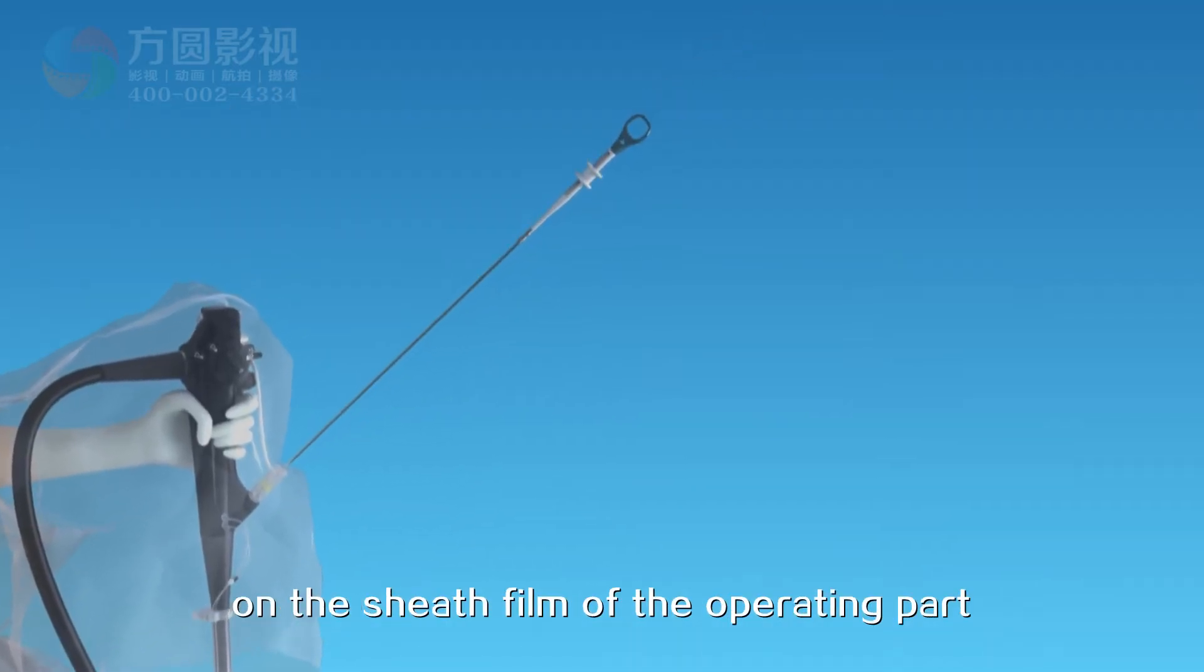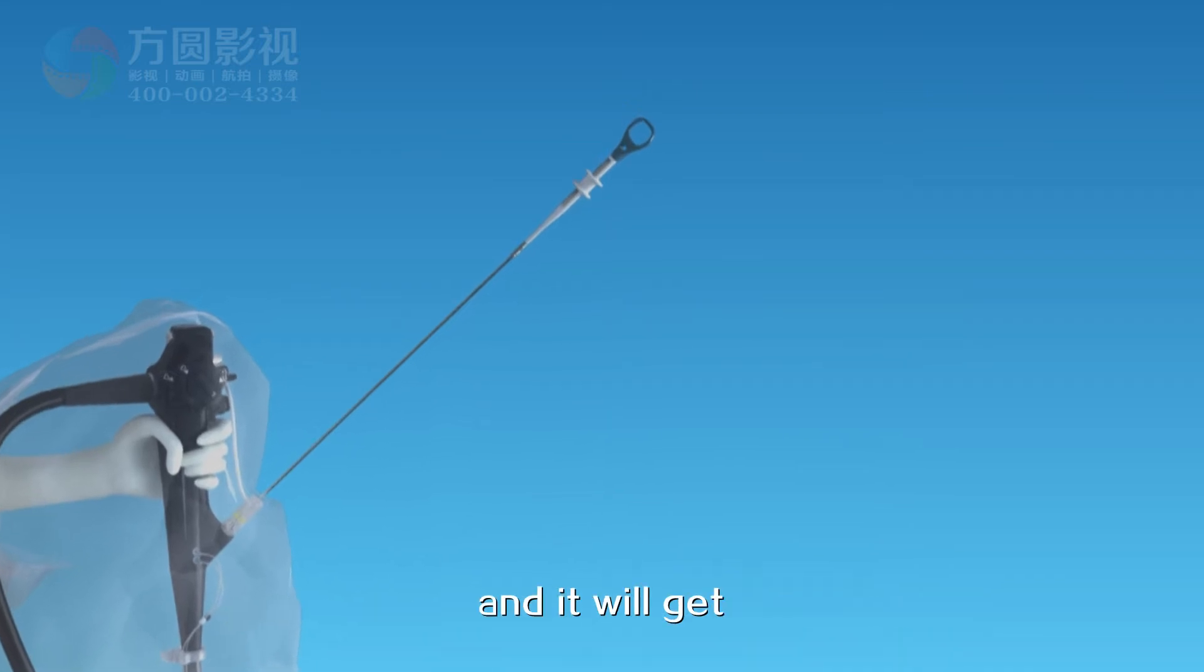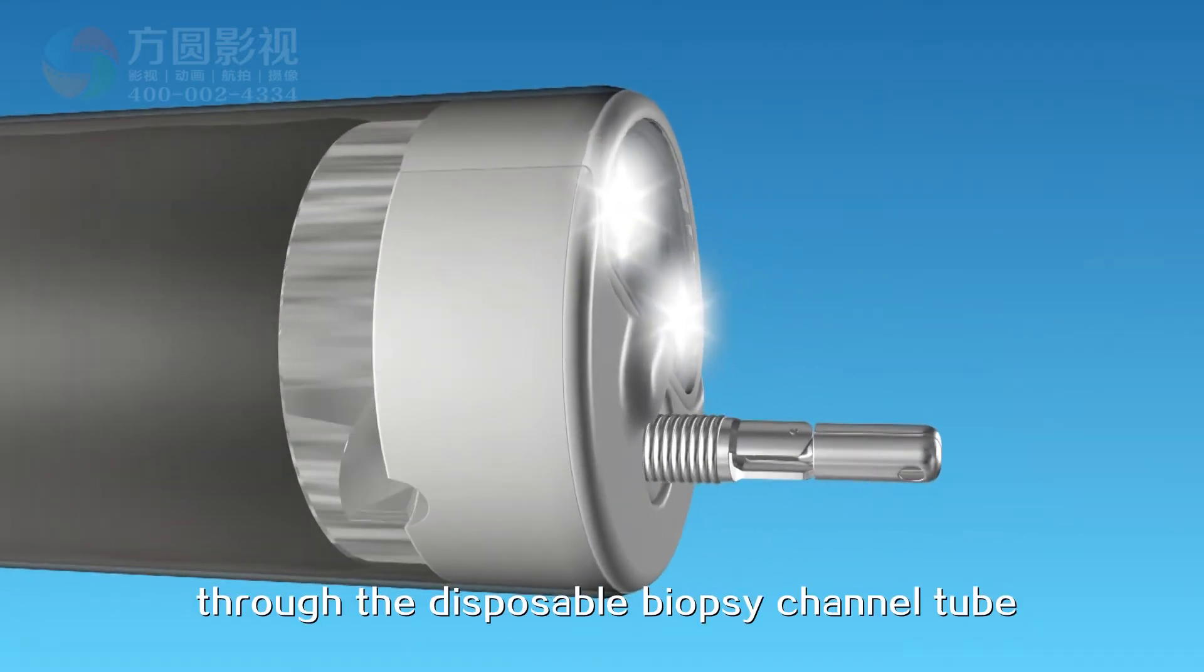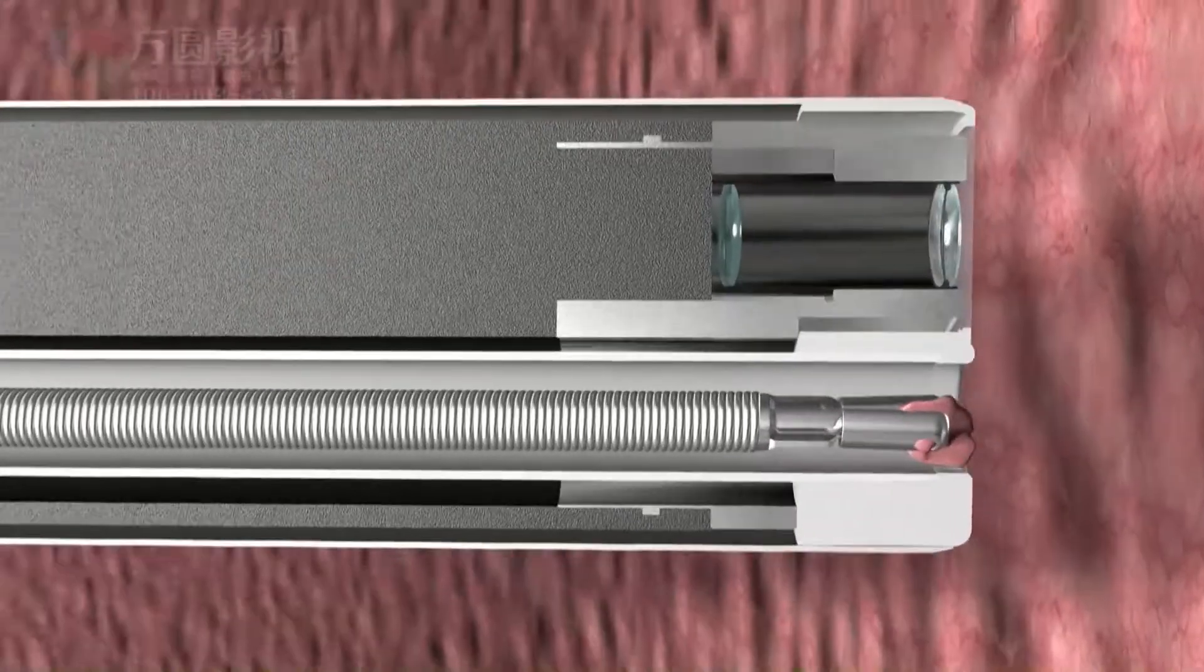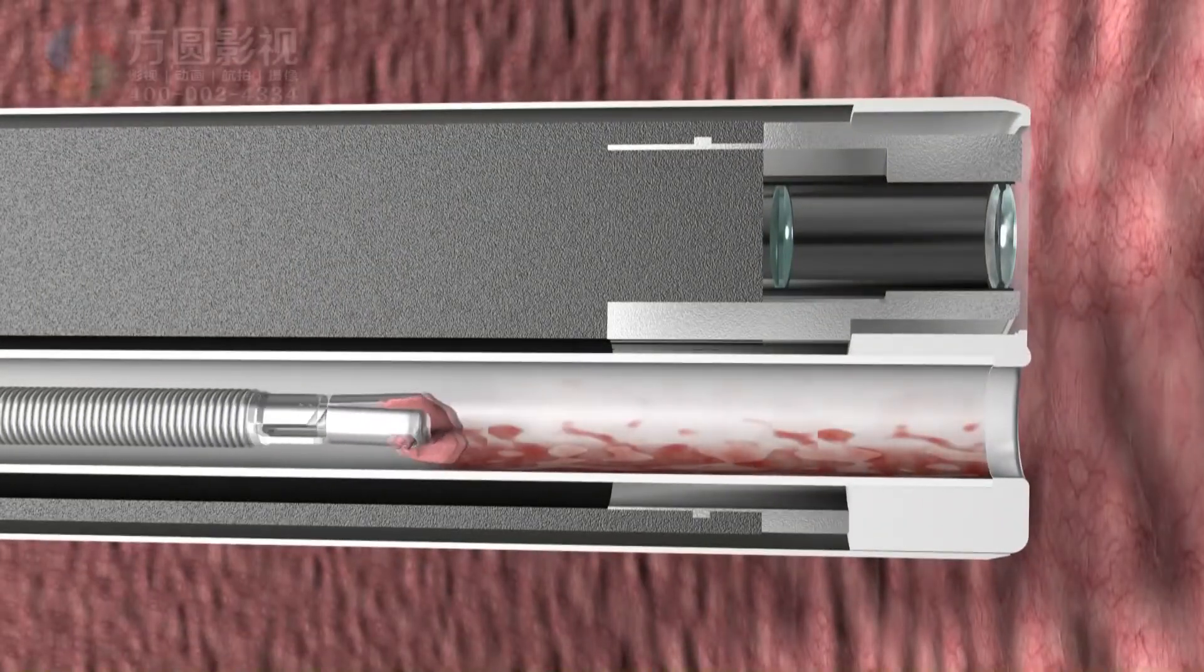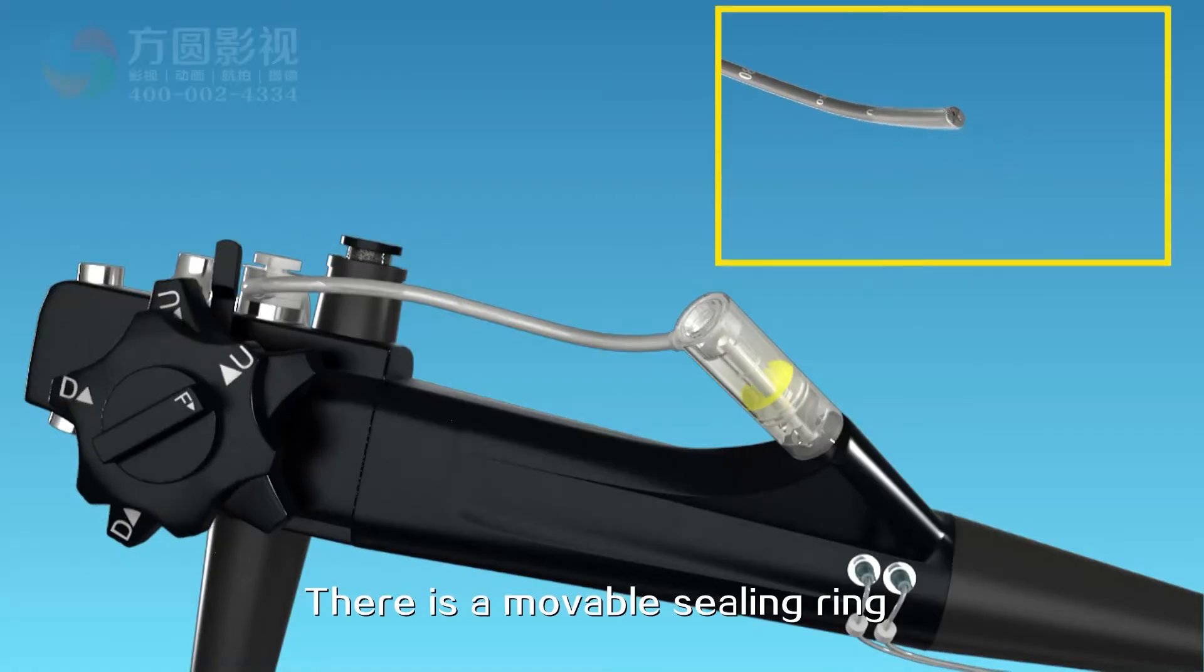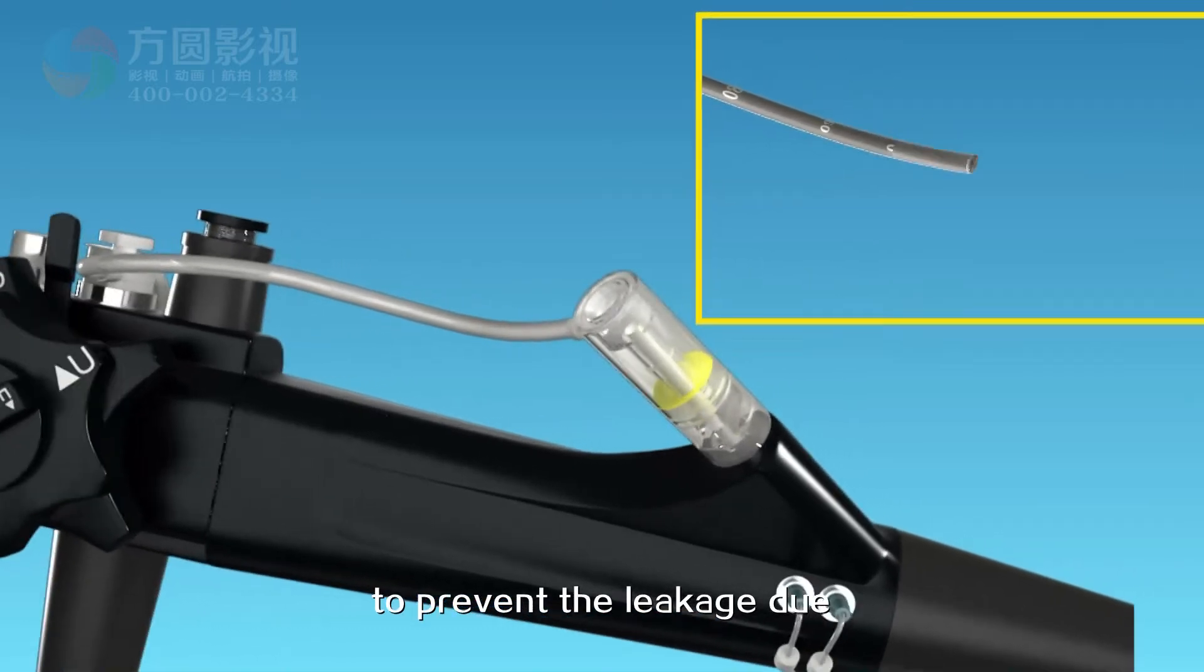Put the biopsy forceps through the biopsy channel tube through the device on the sheath film of the operating part, and it will get the biopsy through the disposable biopsy channel tube. There is a movable sealing ring and the three-way sealing cap to prevent leakage due to movement of the biopsy channel tube when the lens body bends.